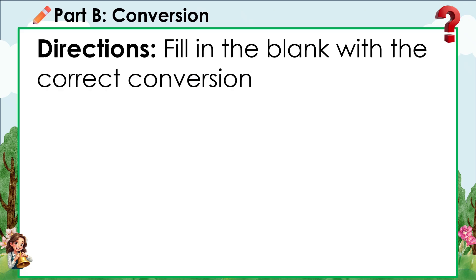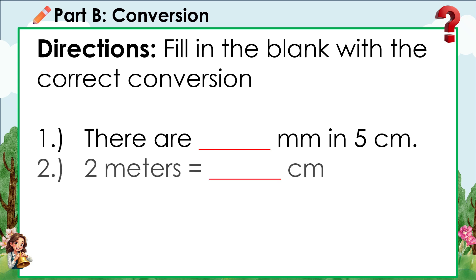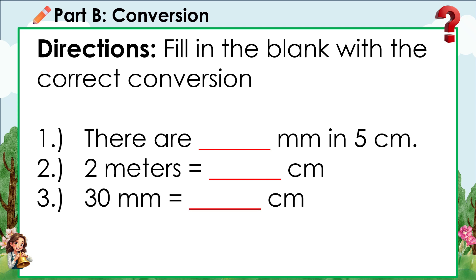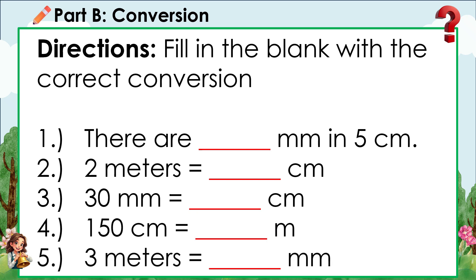Part B: Length Conversion. Directions: Fill in the blank with the correct conversion. 1. There are blank millimeters in 5 cm. 2. 2 meters is equal to blank cm. 3. 30 mm is equal to blank cm. 4. 150 cm is equal to blank meters. 5. 3 meters is equal to blank millimeters.